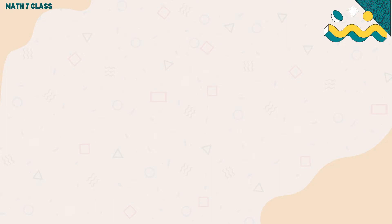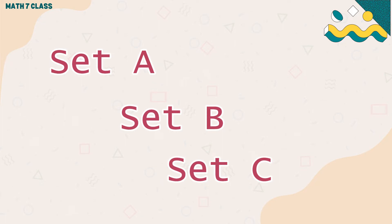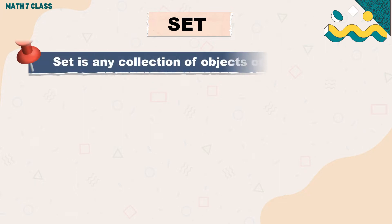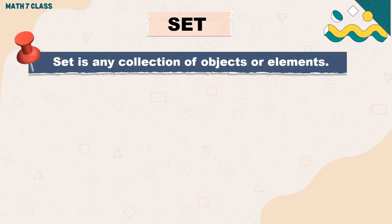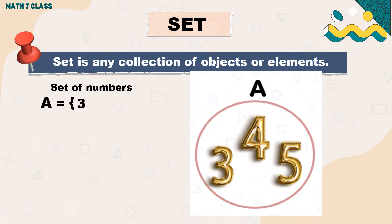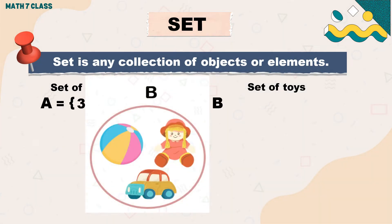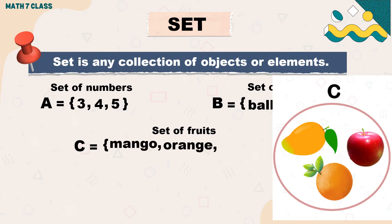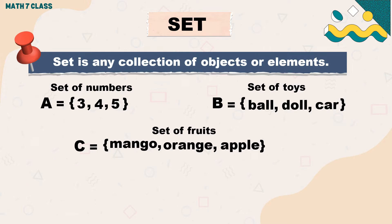The answers in our previous activity — Set A, Set B, and Set C — are all about sets. What is a set? A set is any collection of objects or elements. Just like in our examples, we have a set of numbers, a set of colors, a set of toys, and lastly a set of fruits.